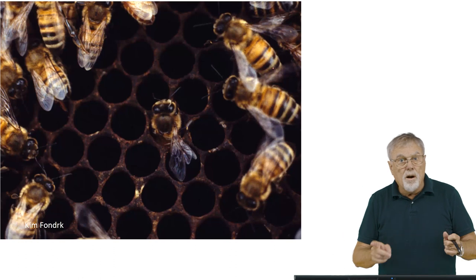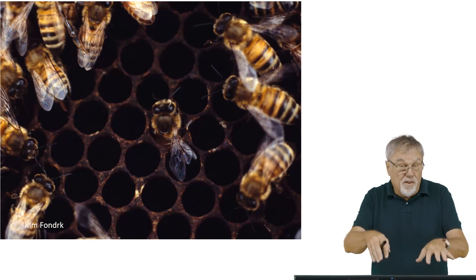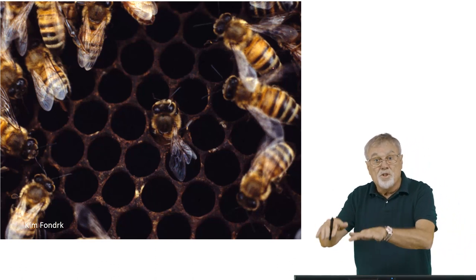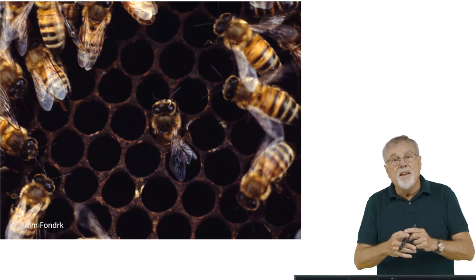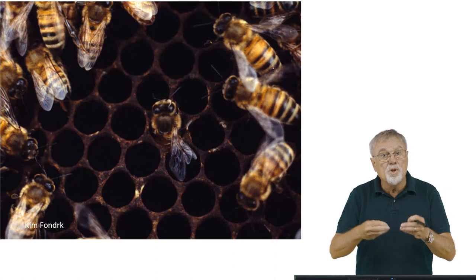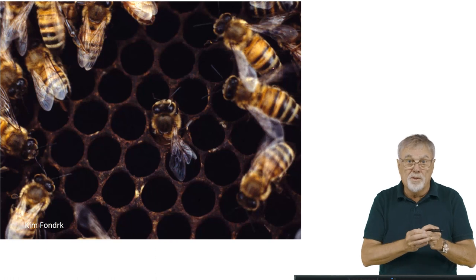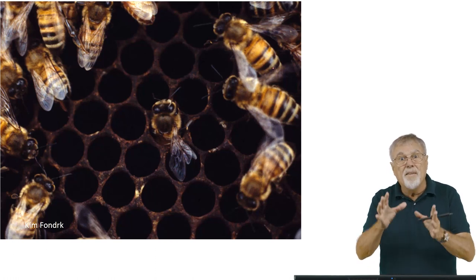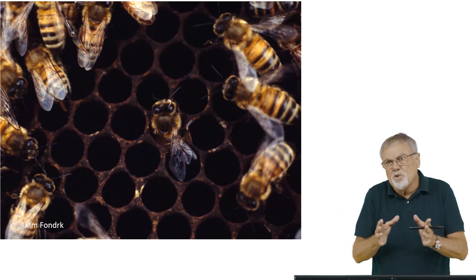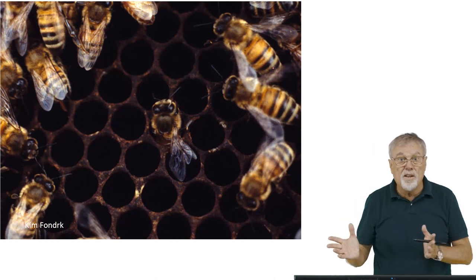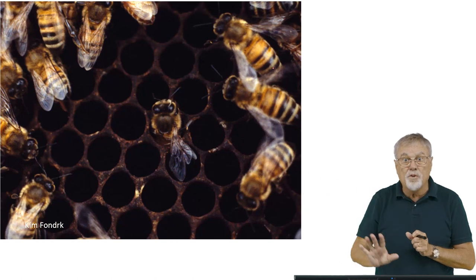Workers can still reproduce — we call them facultatively sterile. Under certain environmental conditions, they're sterile, but under other conditions, such as in a colony that has no queen, they become reproductive and produce eggs. However, they don't mate with males, so their eggs are unfertilized and develop into males. This is called haplodiploidy, a trait that occurs across about 20% of all insect species, where males are derived parthenogenically from unfertilized eggs.